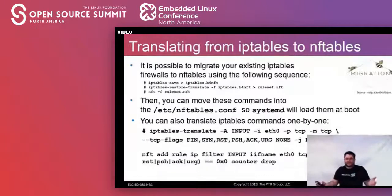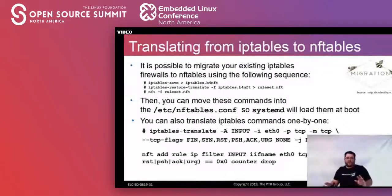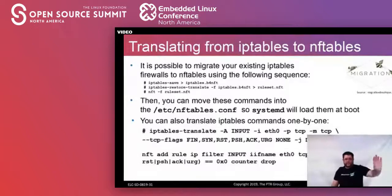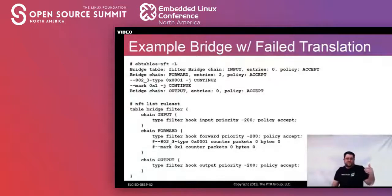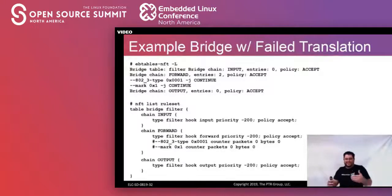I talked very briefly about translating IP tables to NF tables — don't do it. If you want to try it just to figure out how things work, you can try, but it's probably not going to work the way you expect. One simple example: a bridged firewall setup from IP tables, after translation, had a lot of pieces explicitly commented out because there was no good way for the translator to translate that back into something useful for NF tables — the concept doesn't exist the same way.